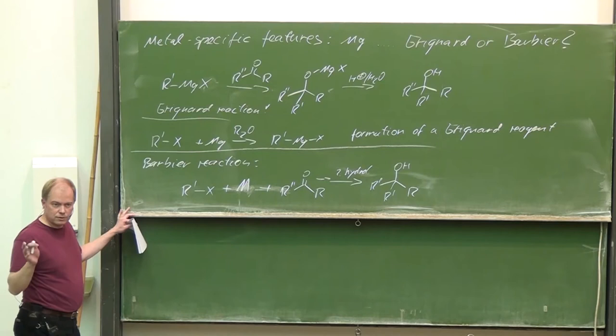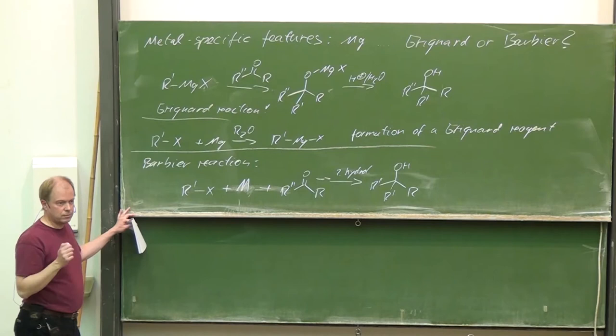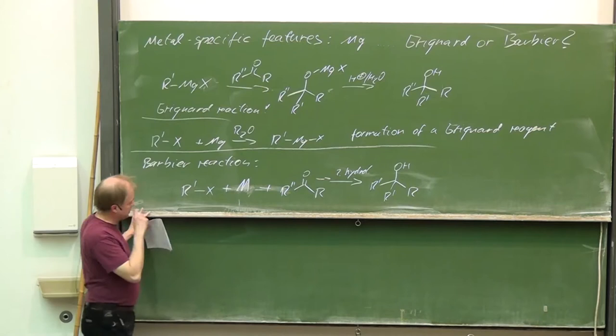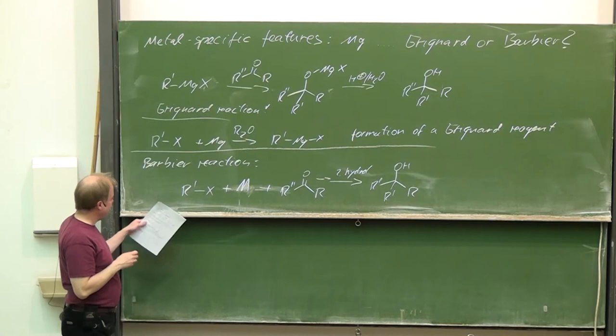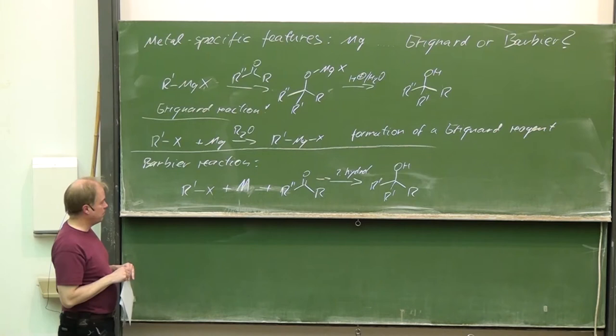A bit of Barbier's work is based on Wurtz. Wurtz, 40 years earlier, tried to treat alkyl halides with sodium, as you know, getting Wurtz coupling products. We will see Wurtz coupling products later on. It's Barbier's idea to use that combination of metal and a carbonyl group. The Barbier reaction is still in use today and becomes more and more important.